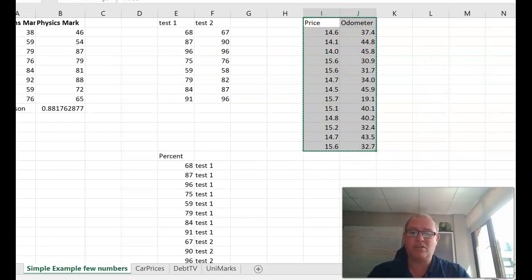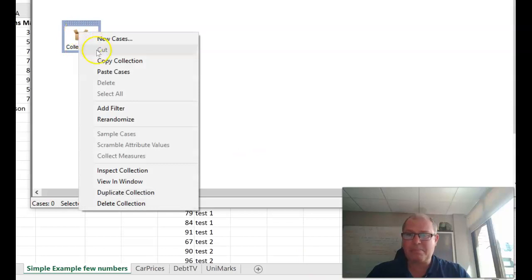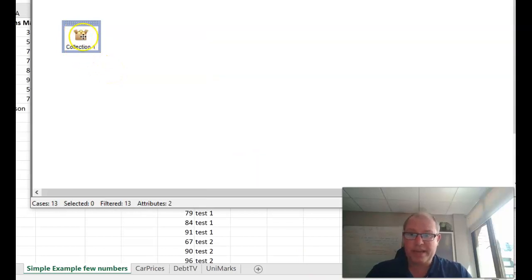You're going to grab the titles and the numbers of the price and odometer, press Ctrl+C, and then you're going to go into Fathom and paste those in. When you go to Fathom to paste those in, right click, paste cases, and Bob's your uncle, it's full of data.